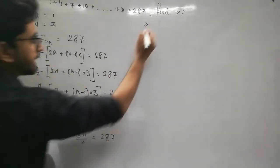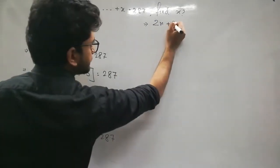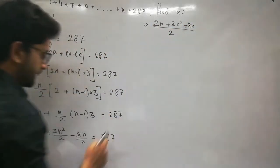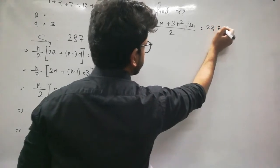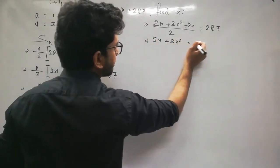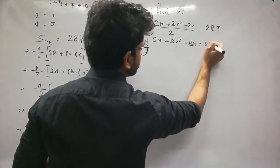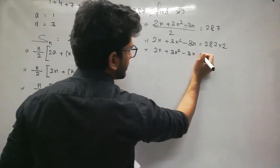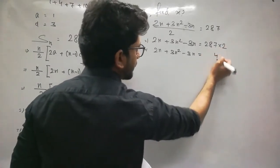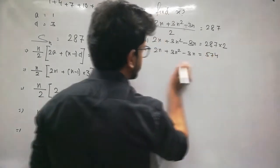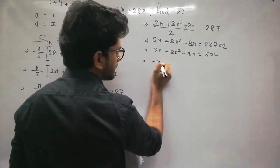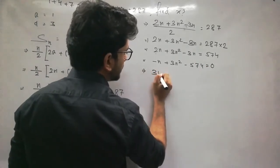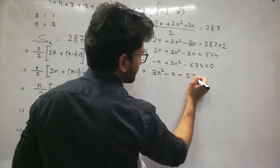Rearranging the quadratic: 3n² − n − 574 = 0. To factorize, multiply 574 × 3 = 1722. The two factors of 1722 that subtract to give 1 are 42 and 41. So: 3n² − 42n + 41n − 574 = 0.